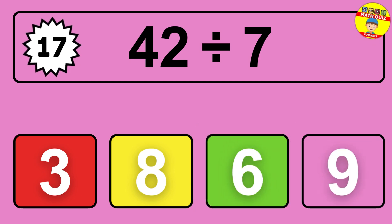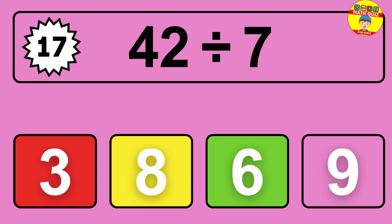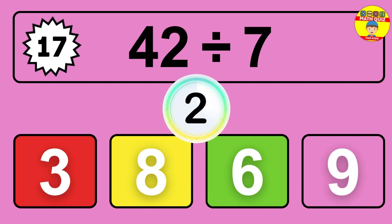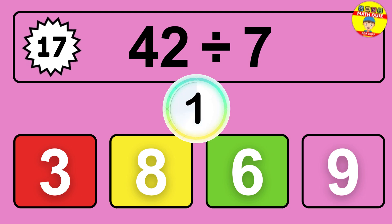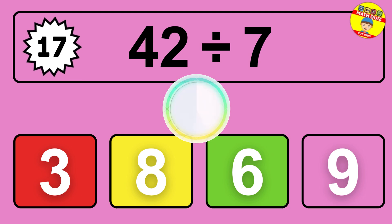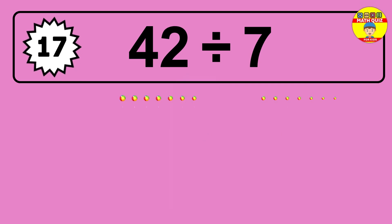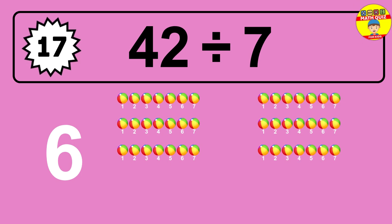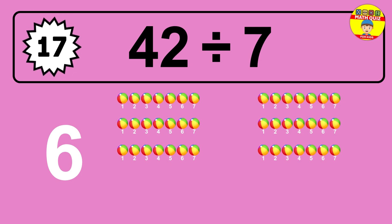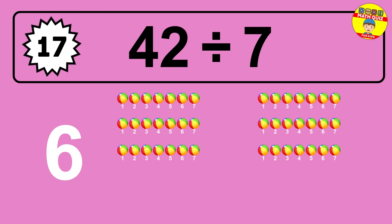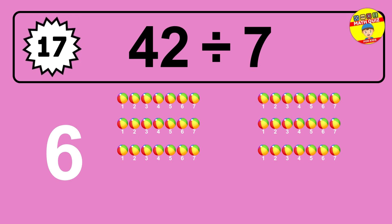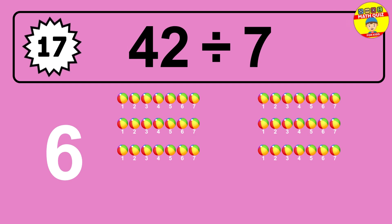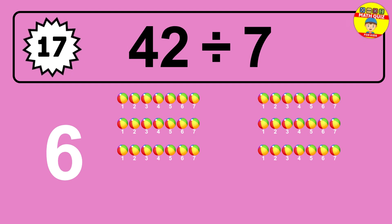42 divided by 7 is time to think. Let's go to the solution. Divide the number 42 by 7. Each group contains 7 units, so dividing 42 by 7 results in 6 equal groups. Thus the result is 42 divided by 7 equals 6.